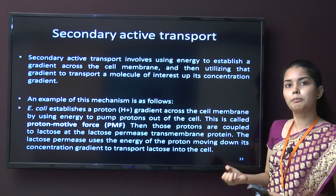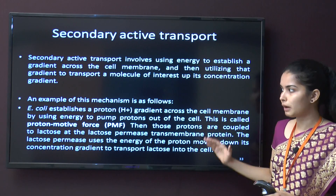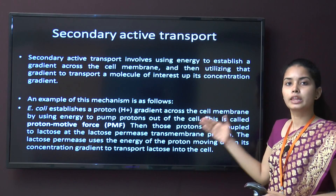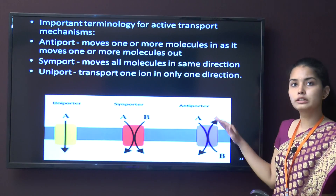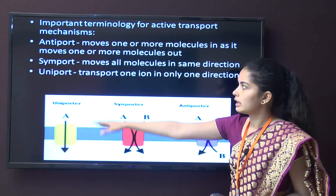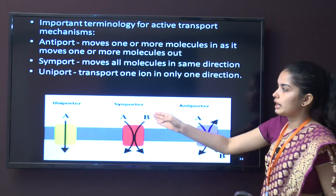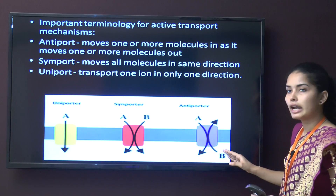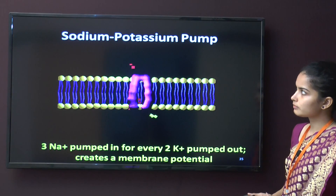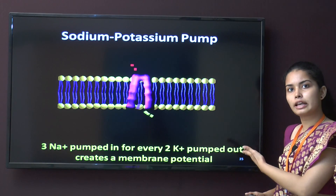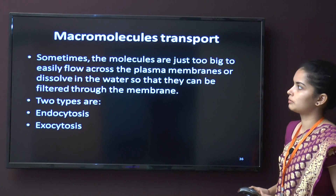An example of secondary active transport is E. coli: proton pumping provides energy so materials can be passed — for example, lactose uses the proton motive force for transport through the membrane. Three types of mechanisms exist: uniport, which transports only one ion in one direction; symport, which passes two ions in the same direction; and antiport, which passes ions in two different directions. The sodium-potassium pump is an example of antiport — three sodiums are pumped out while two potassiums are pumped in.